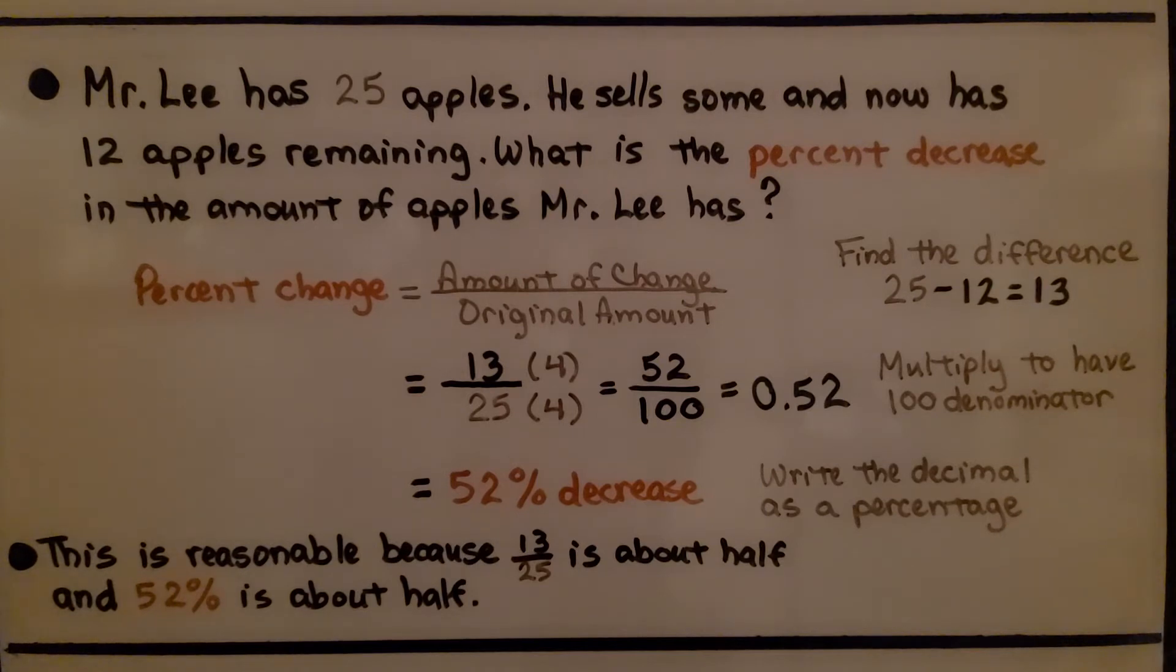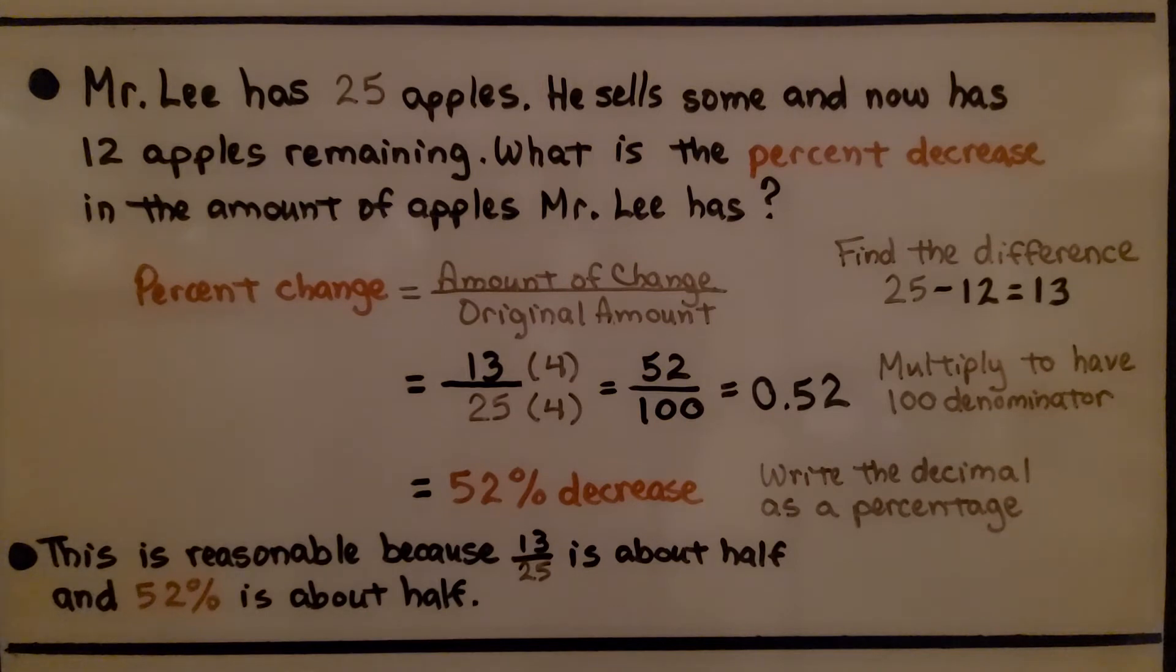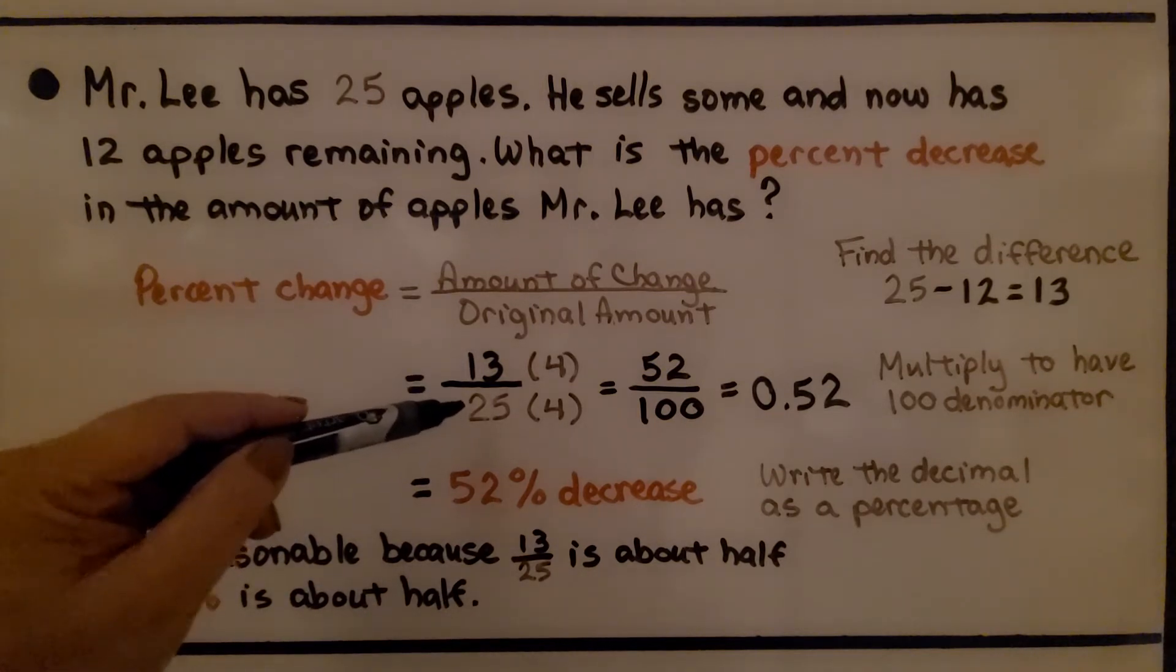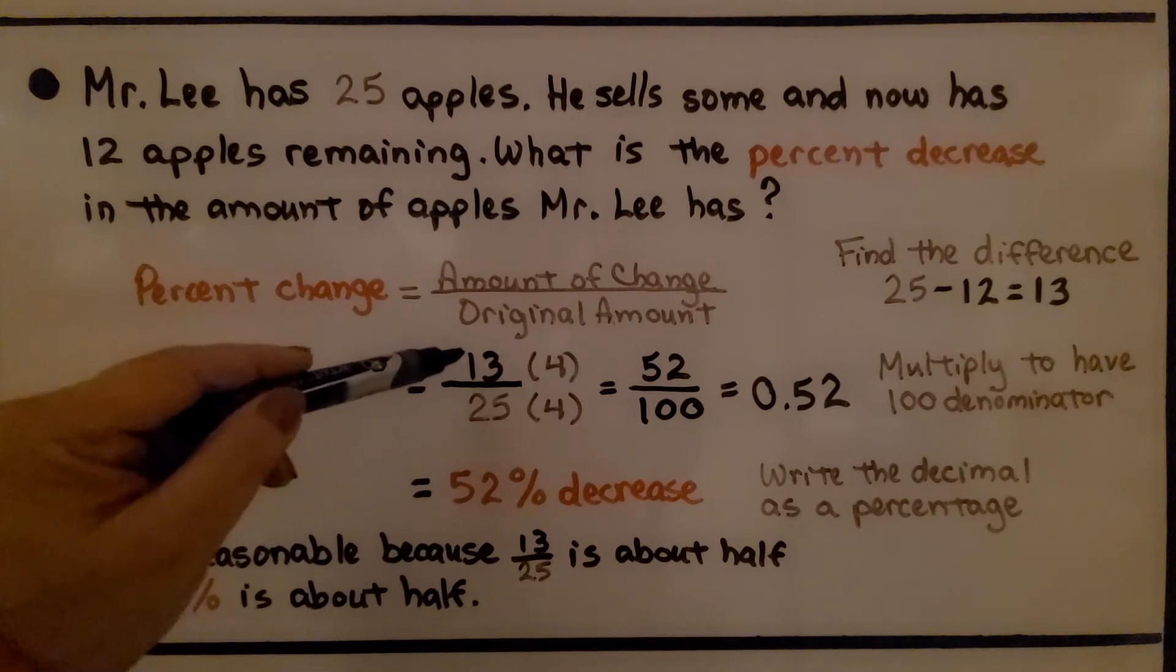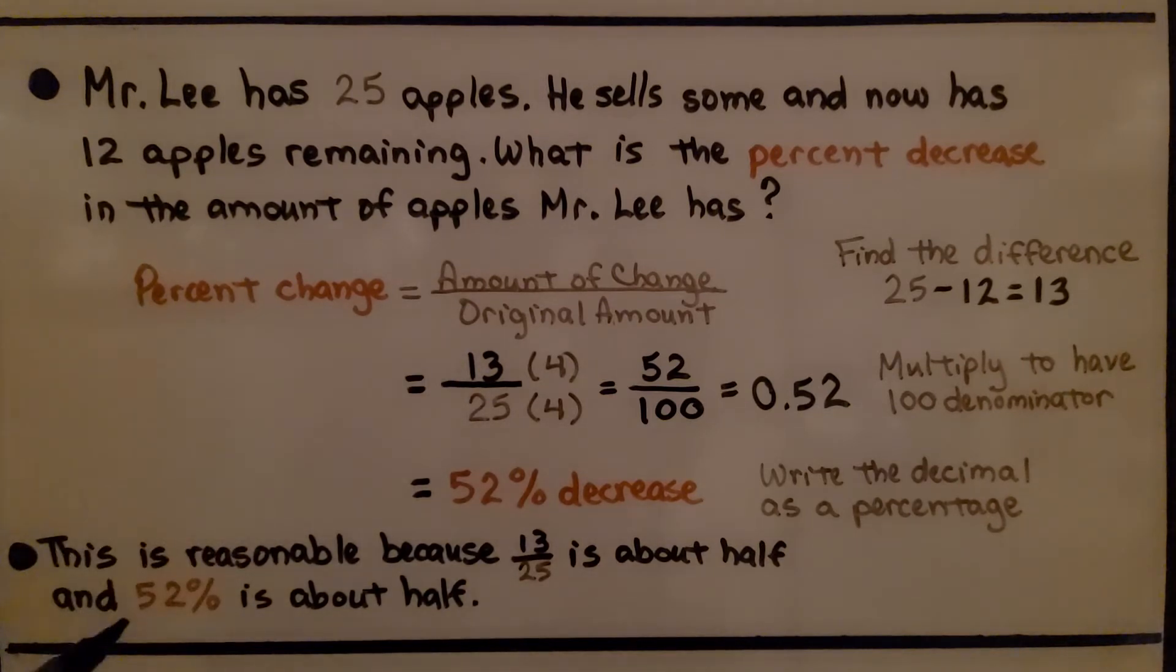This is reasonable because 13 25ths is about half. Half of 25 is 12 and a half. So 13 is close to 12 and a half. It's close to one half. And 52 percent is about half. 50 percent would be half. So this is reasonable. It makes sense.